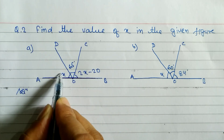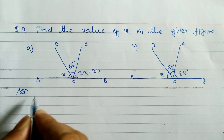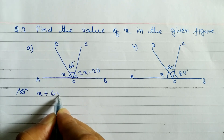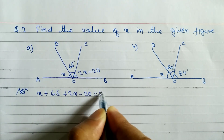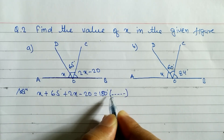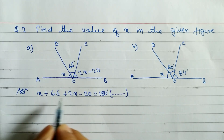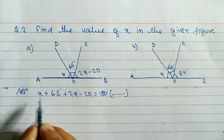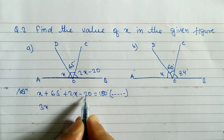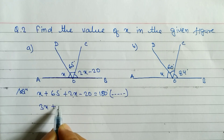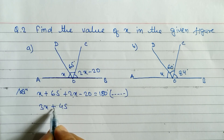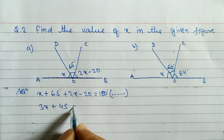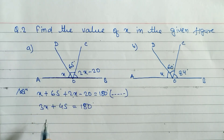So when you add these three angles we get 180 degrees. We can write: x plus 65 degrees plus 2x minus 20 is equal to 180 degrees. The reason you have to write is: supplementary angle. After that we add like terms — x plus 2x gives 3x, and 65 minus 20 gives plus 45, since 65 is greater and positive.